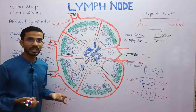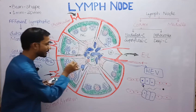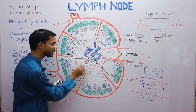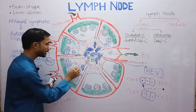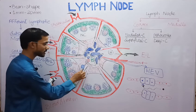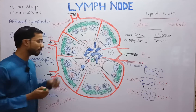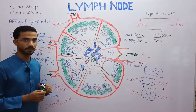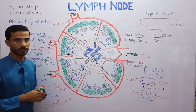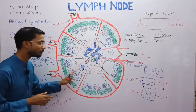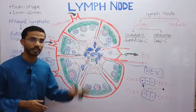The first function: when lymphocytes move through the blood, the cuboidal cells of the high endothelium venule have receptors that capture the moving lymphocytes and allow them to enter the paracortex region. T lymphocytes remain in the paracortex, while B lymphocytes move into the primary nodules and aggregate to form primary nodules.